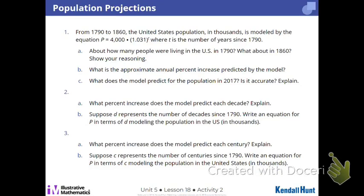This is where we're going to start. We're going to focus on 1abc first. We have a function here: P equals 4,000 times 1.031 to the t. This function works for the population of the United States from 1790 to 1860 in thousands, by the way. So 4,000 is actually 4 million.